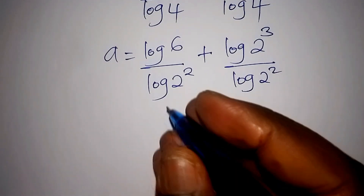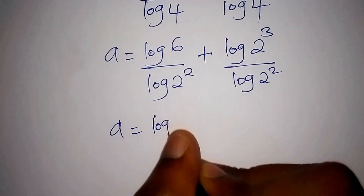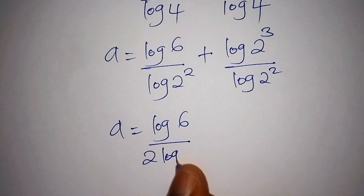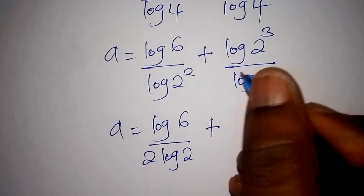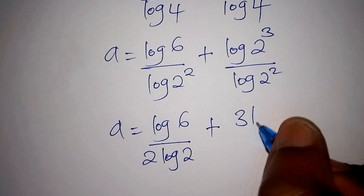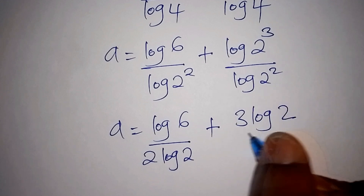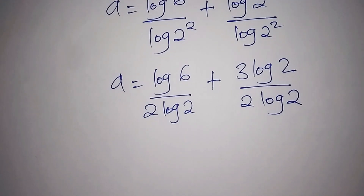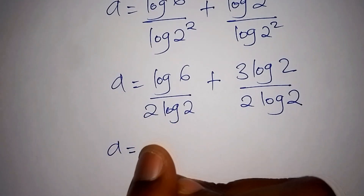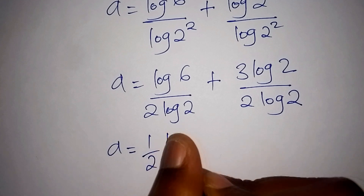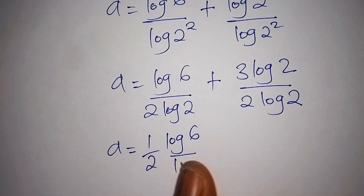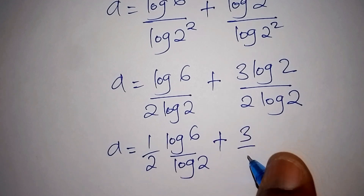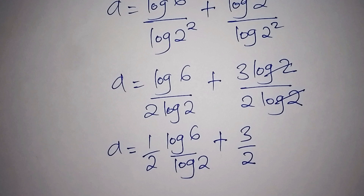So a equals log of 6 over 2 log 2, plus 3 log 2 over 2 log 2. Applying the power rule to the denominators gives us one half times log of 6 over log of 2, plus 3 over 2, since log 2 and log 2 cancel out.